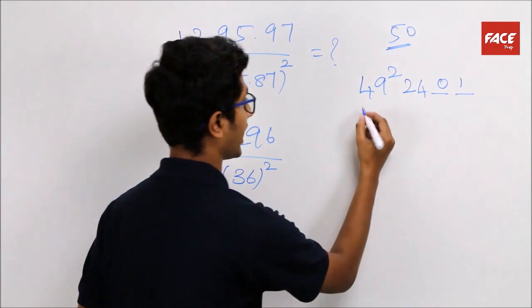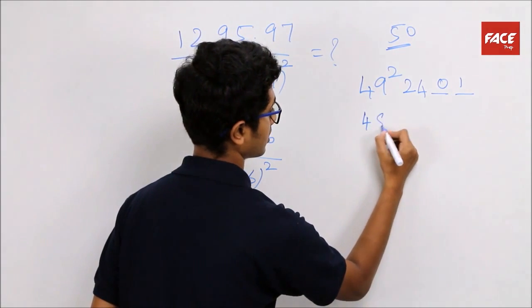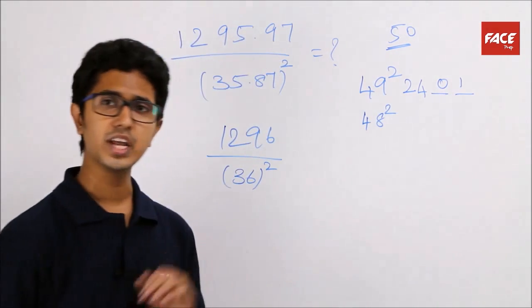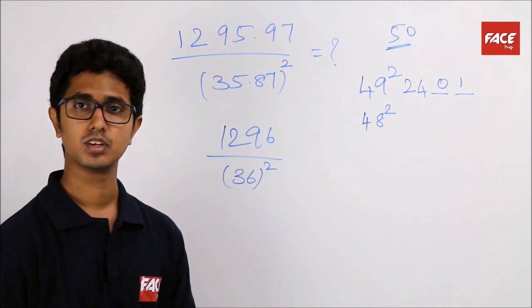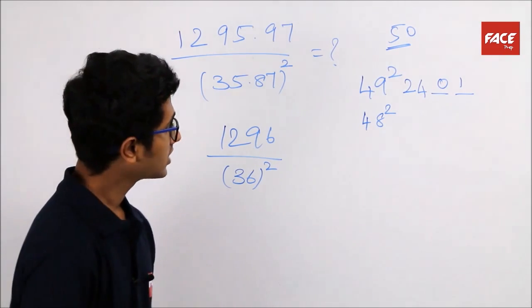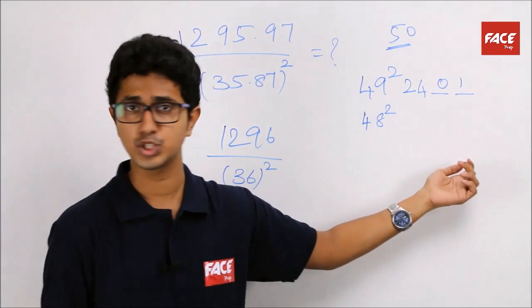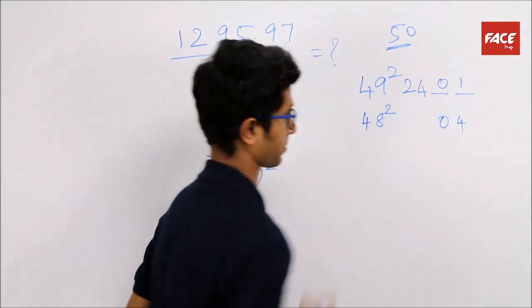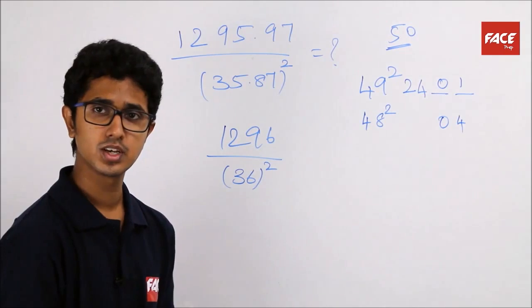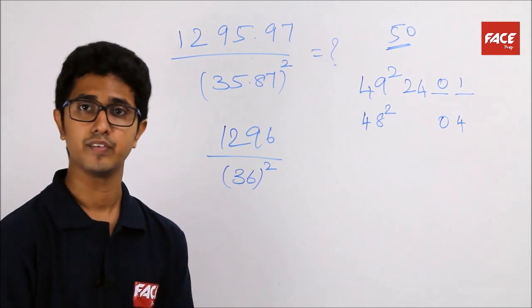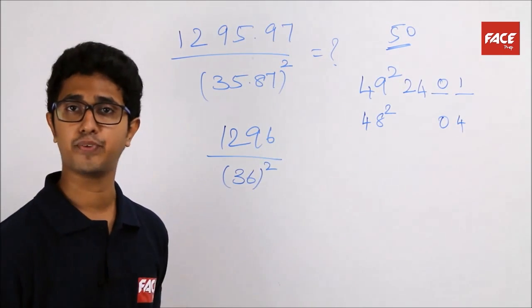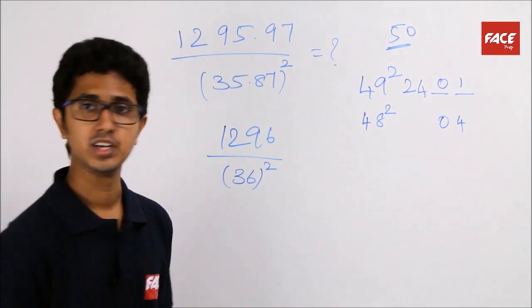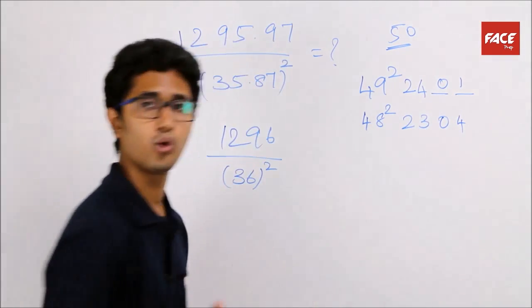Now, let us try to find out 48 square. What is the deviation from 50? 2. So, the last two digits will be deviation the whole square which is 2 square, which will be 04. As of the first two digits, what is 50 by 2? 25. So, remove 2 from 25 which will be 23. So, 48 square is 2304.